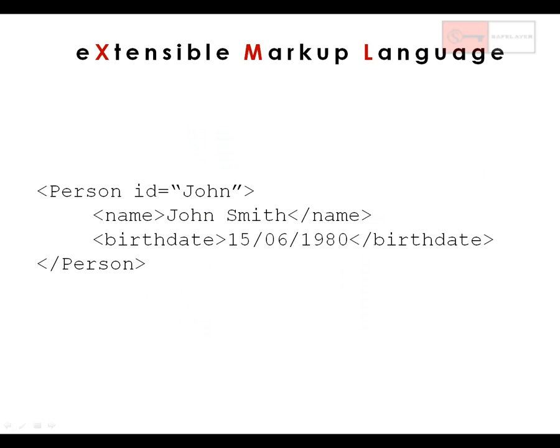In the beginning we had XML, the Extensible Markup Language, which was a first step to easily tag information and include metadata in documents. For example, with this piece of XML we could describe some identity attributes of a person identified as John. In particular, we could use a few simple XML tags to include his full name and his birth date.